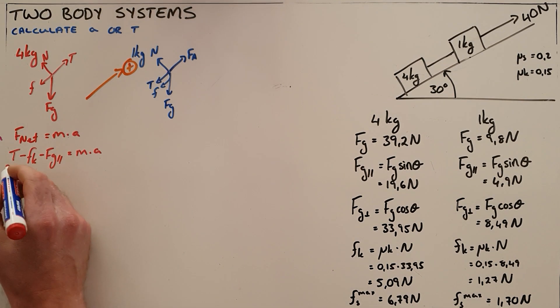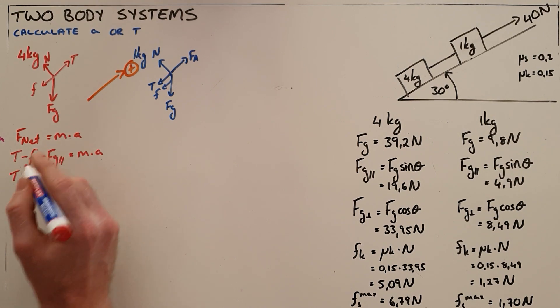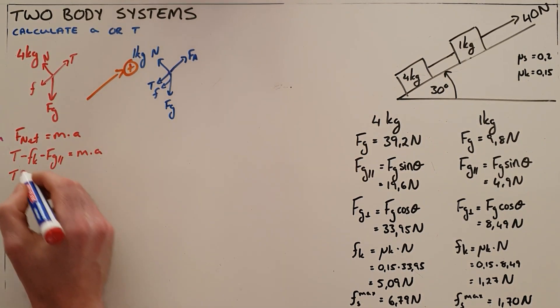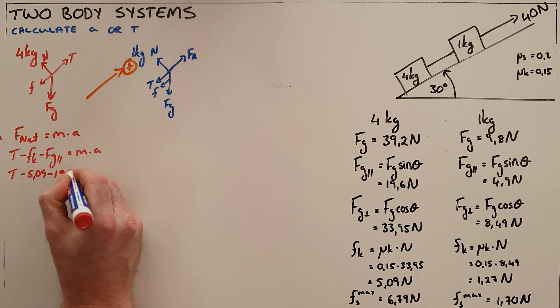And then I can also substitute in the values that I have been given. Tension has not been given. Kinetic friction I have calculated as 5.09 and the parallel component of gravity I've also calculated as 19.6.